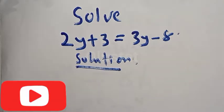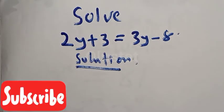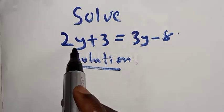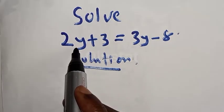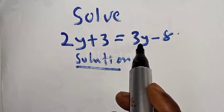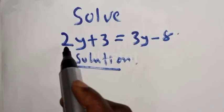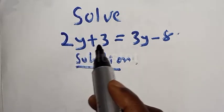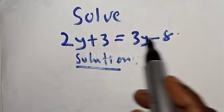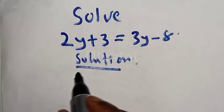What we need to do is to collect like terms. We collect like terms — that is, we have 2y here and we also have 3y here. We bring the y terms to the left hand side, and take the constant value to the right hand side.